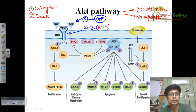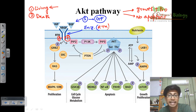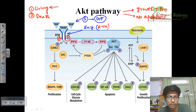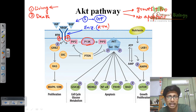The ligand binding causes one receptor tyrosine kinase subunit to phosphorylate the other through cross-phosphorylation, forming the active complex. This active complex then recruits phosphatidylinositol bisphosphate — PIP2 — which is embedded in the membrane, and converts it to PIP3 via an intermediate: PI3 kinase. We previously saw the pathway of PI3 kinase.